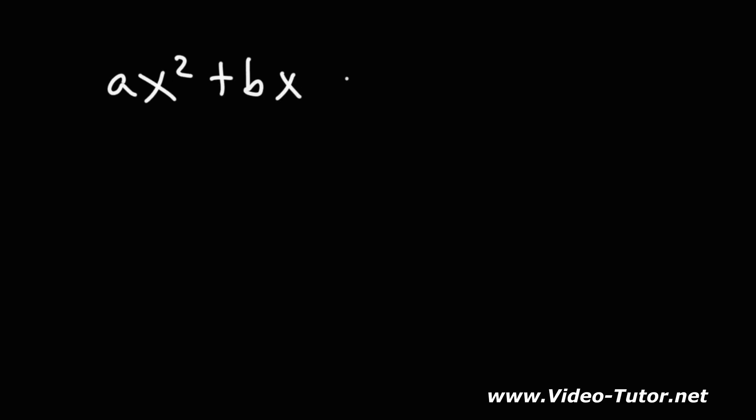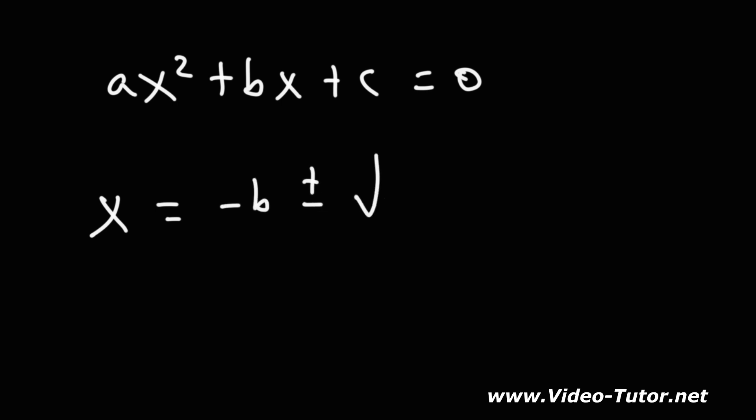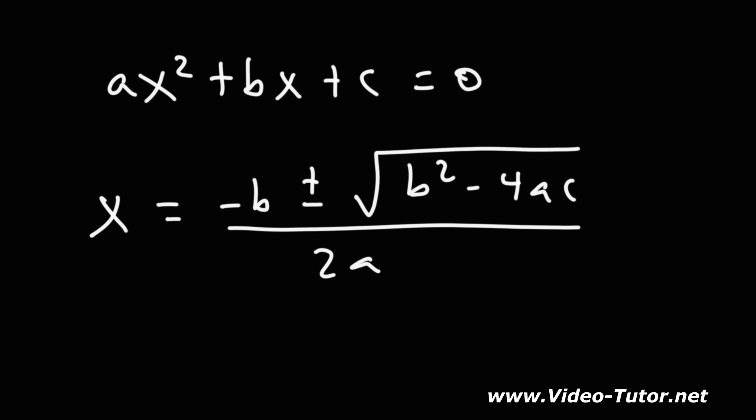One last topic: the quadratic equation. If Ka or Kb is not less than 10⁻⁴, you may need to use it. In standard form, the quadratic equation is ax² + bx + c = 0, and to solve for x: x = (−b ± √(b² − 4ac)) / 2a. For those who want videos on solving difficult acid-base problems using this formula or want a practice test, more videos and links will be in the description below. Thanks for watching.